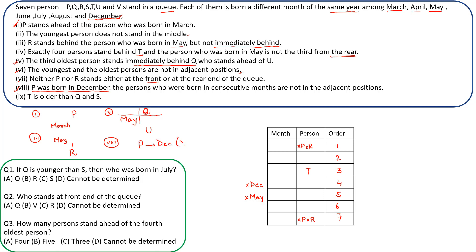So P is the youngest of all. The ninth clue says persons born in consecutive months are not in adjacent positions. Also, T is older than both Q and S. Since P is born in December and T is older than two people, T must be born at least in June as a minimum birth month.